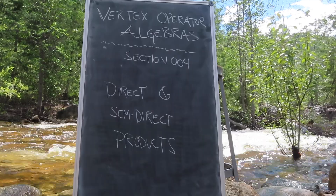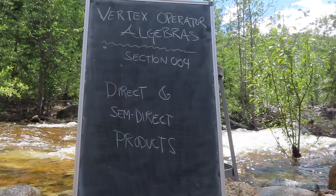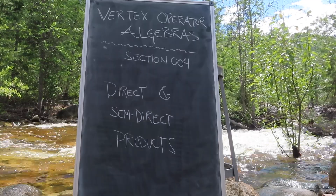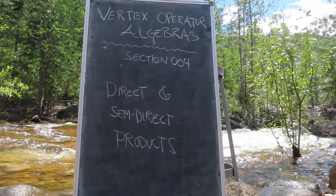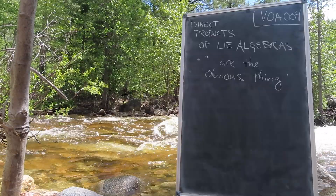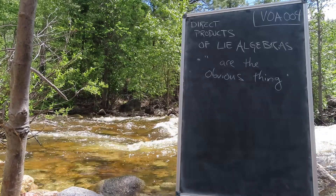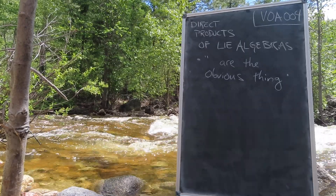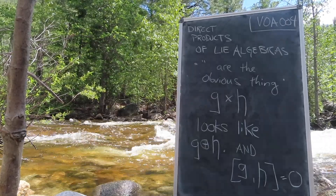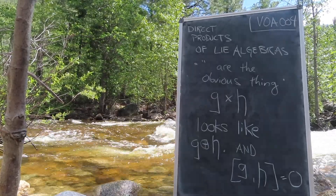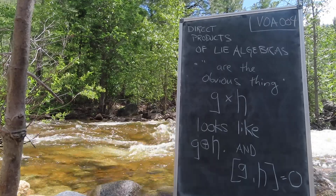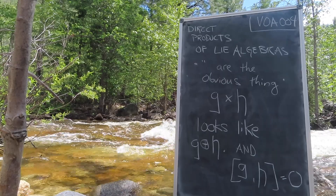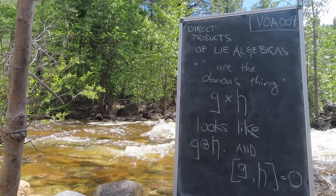Welcome back. In today's installment of vertex operator algebras, we are going to continue our discussions of structures within algebras by looking at those who can be viewed as products of two Lie algebras. Confusingly, the direct product of two Lie algebras has the vector space structure of a direct sum. To define the algebraic structure we must define the Lie bracket. The individual subalgebras retain their original Lie algebra structure, and any cross brackets between two subalgebras must vanish. It is the simplest possible way to combine two Lie algebras.